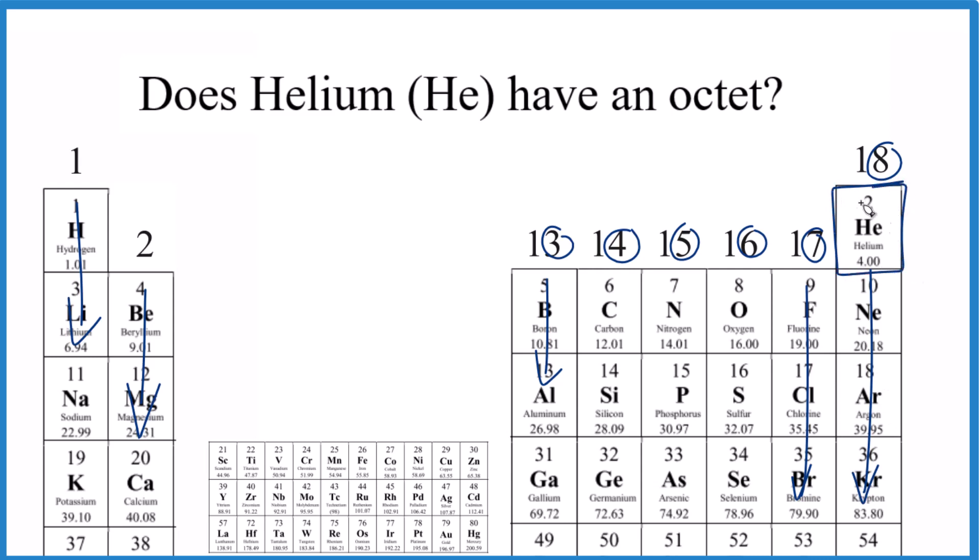So helium doesn't form an octet, but it still fills its highest energy level. The atomic number tells us the number of protons, and for these neutral elements on the periodic table, it tells us the number of electrons. If you only have 2 electrons for the atom, you can't get an octet.